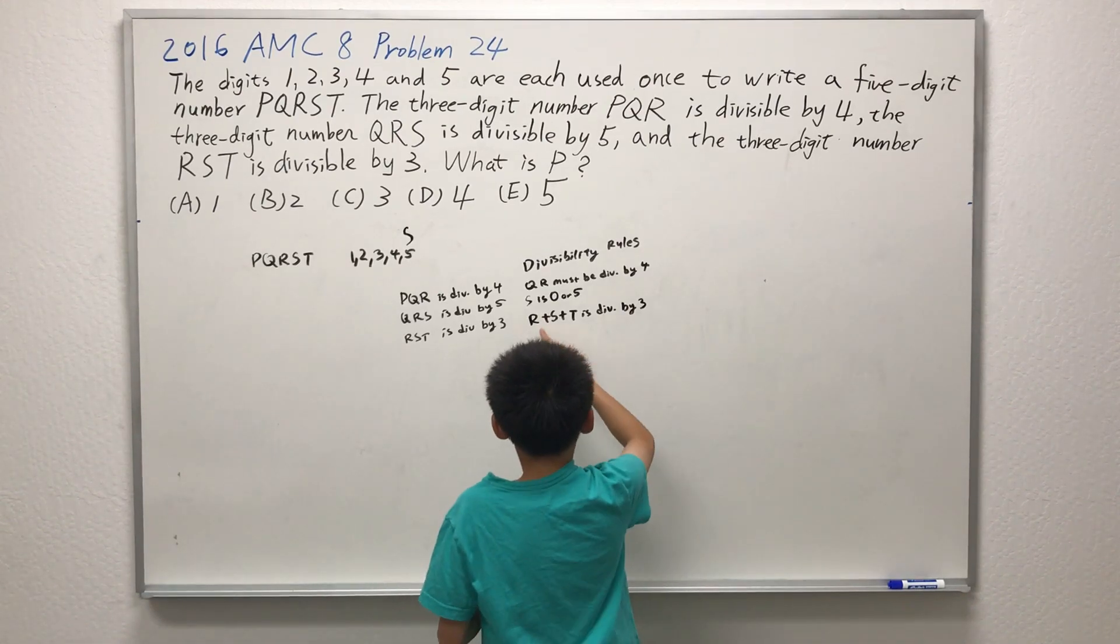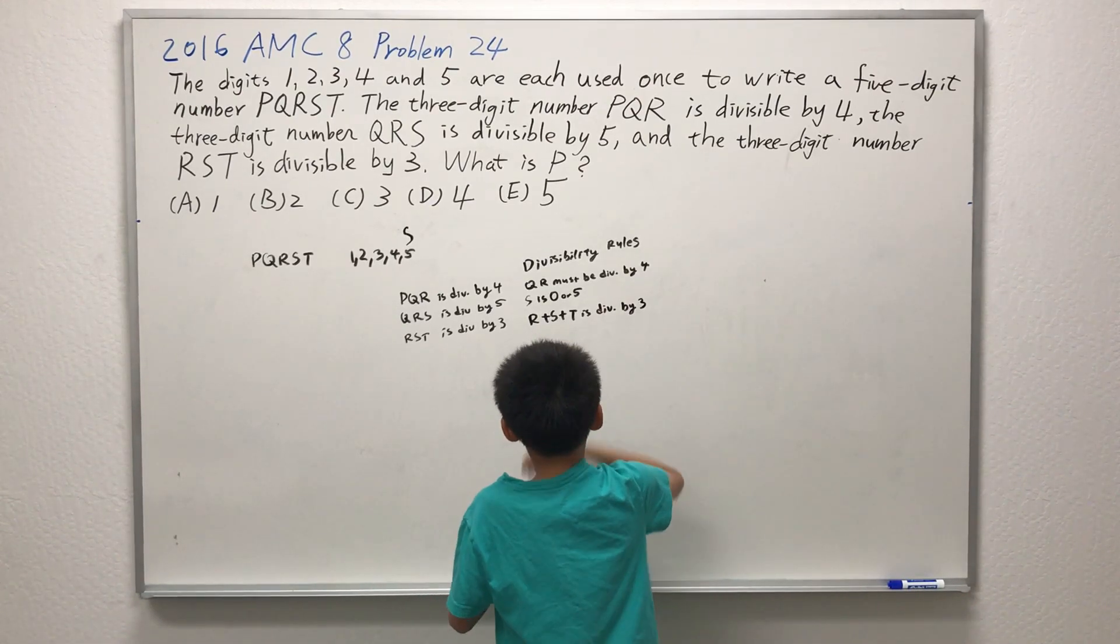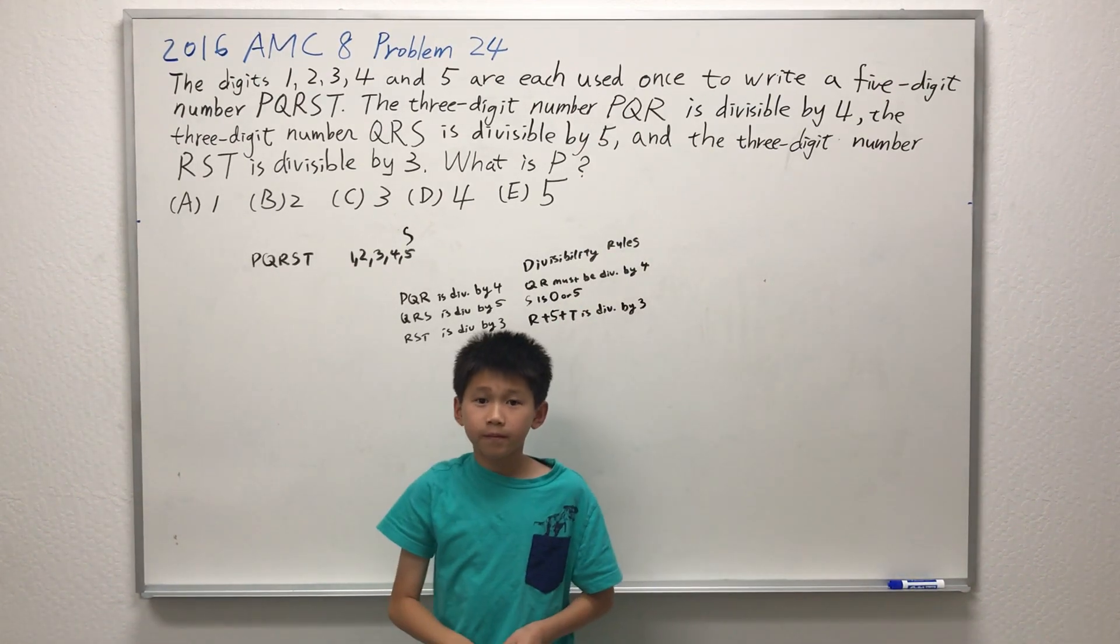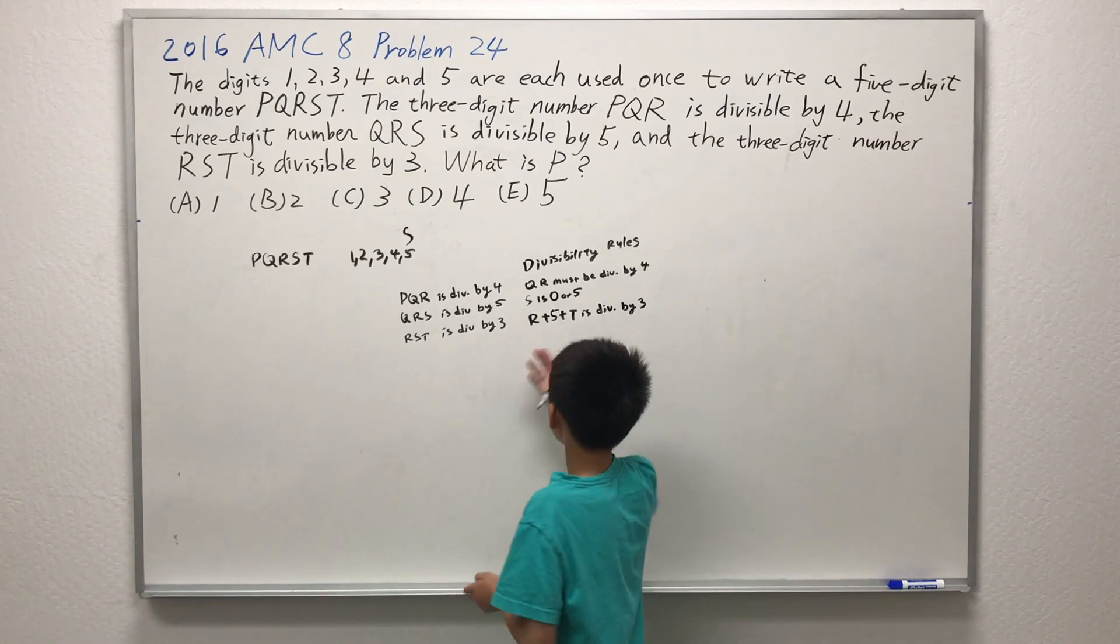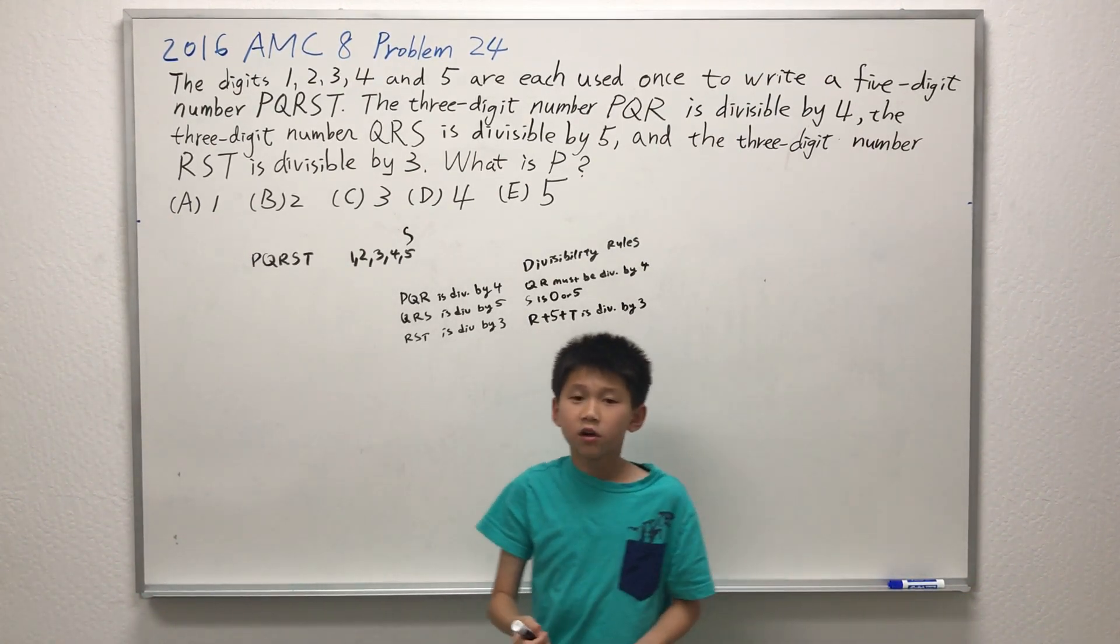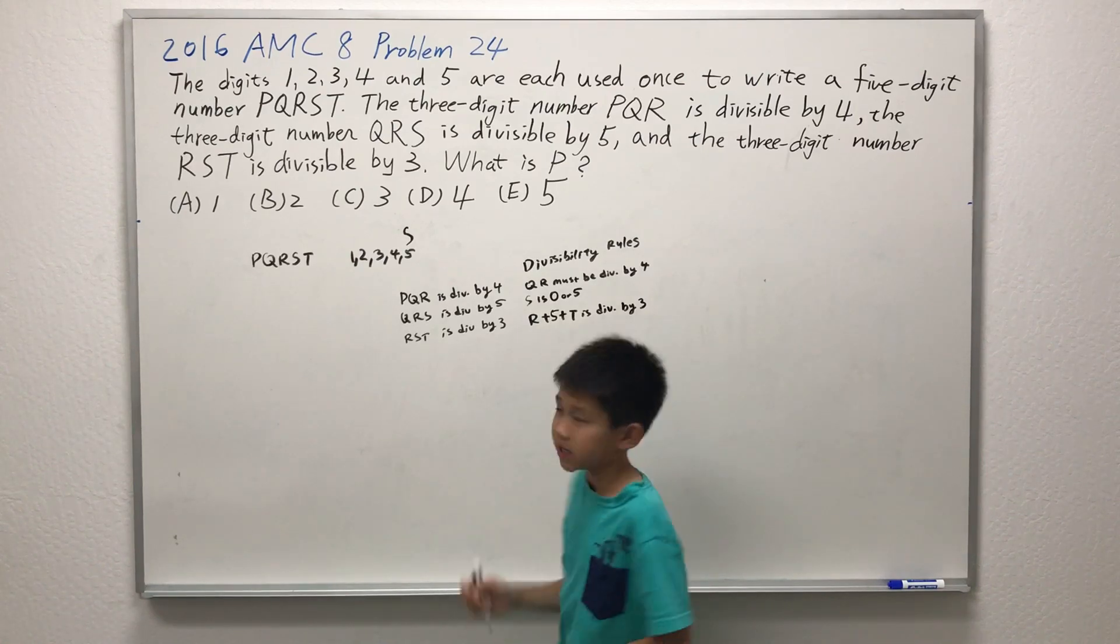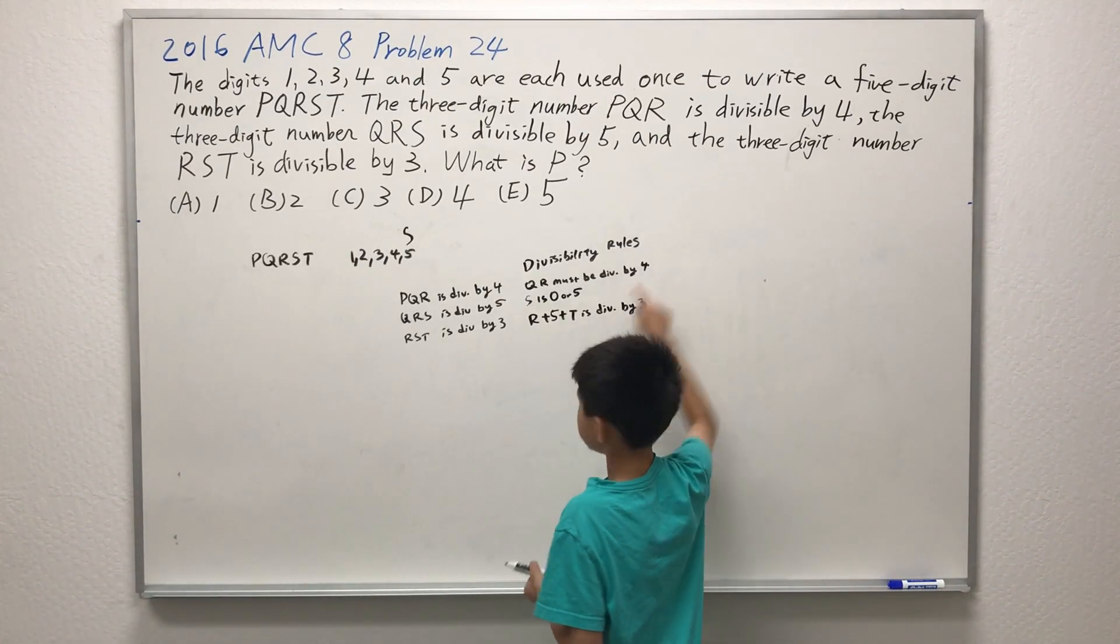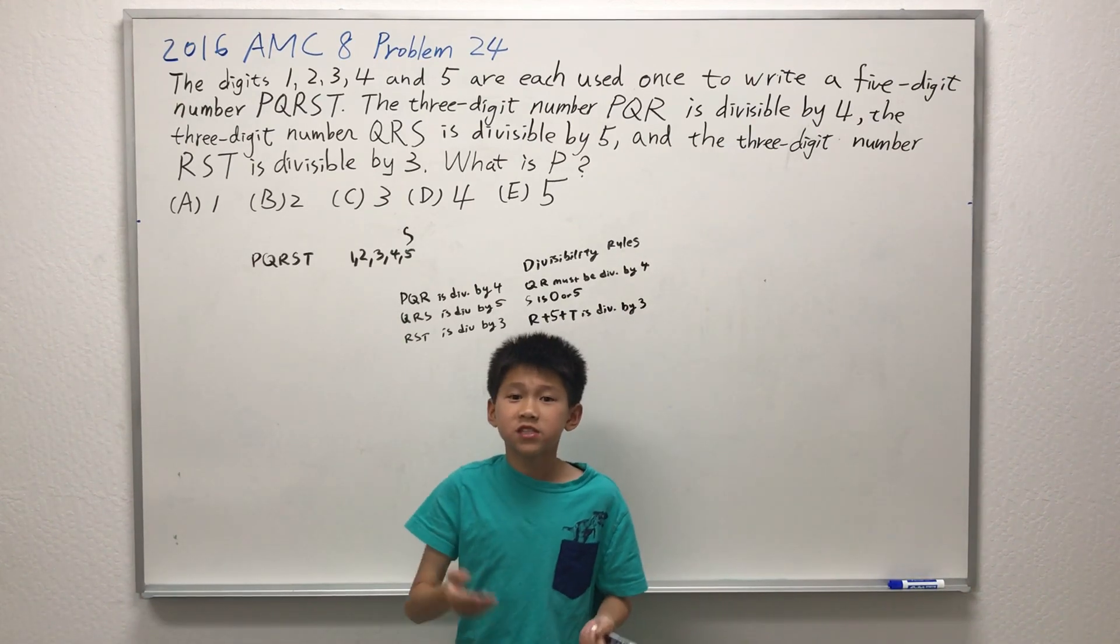Now it says R plus S plus T, we can replace the S with 5, has to be divisible by 3. But even though we have one variable in this equation, there are still so many cases where R plus 5 plus T can be divisible by 3. So let's move on to the first criteria again to see if it's easier to work with.